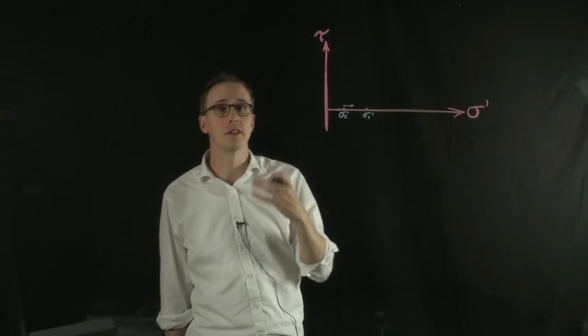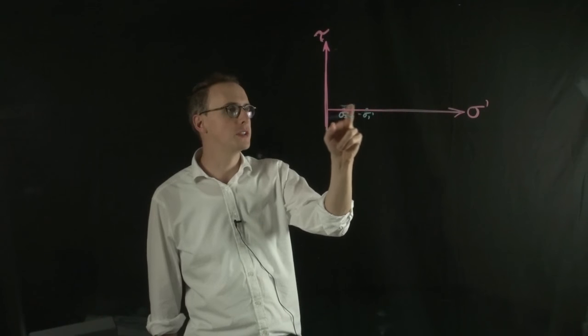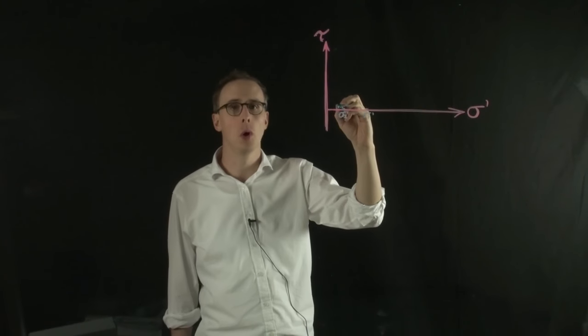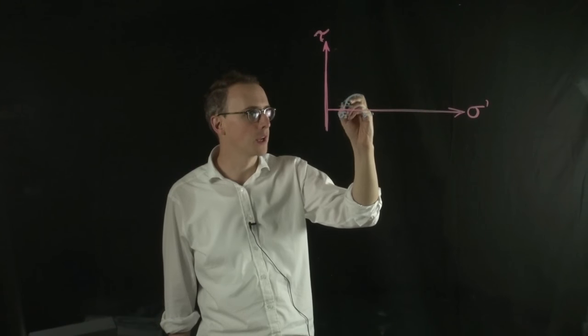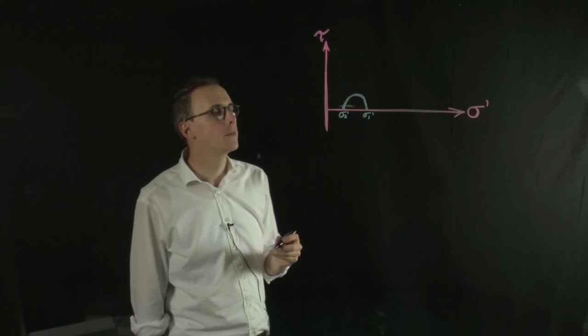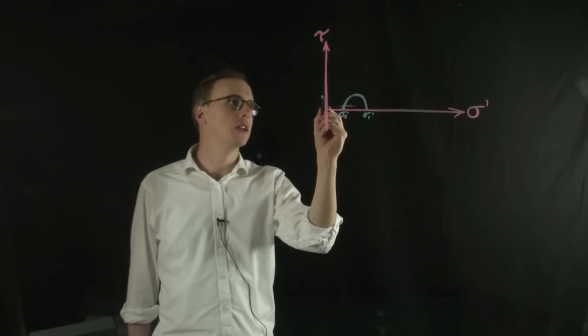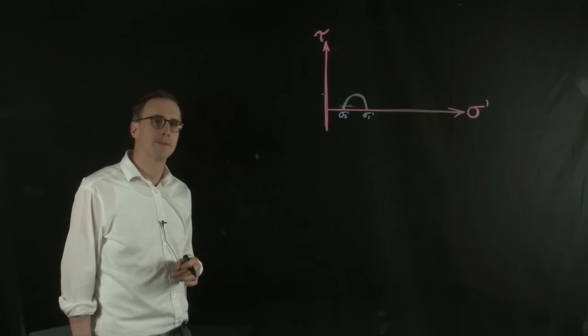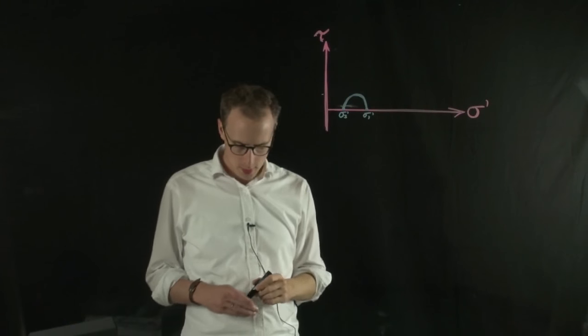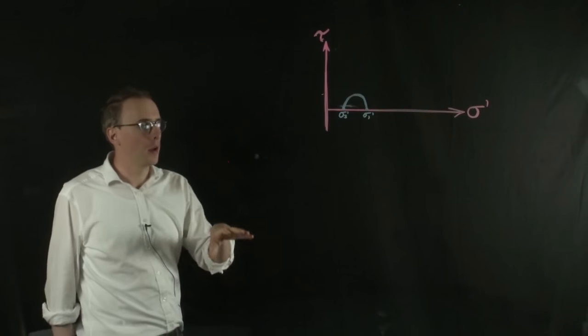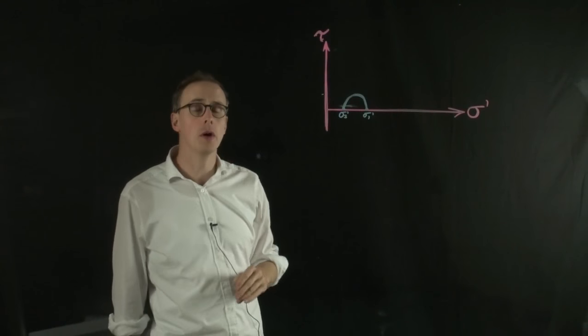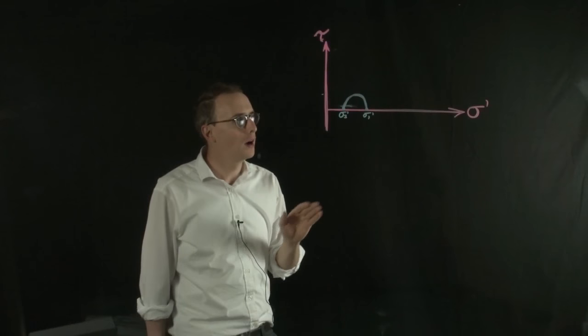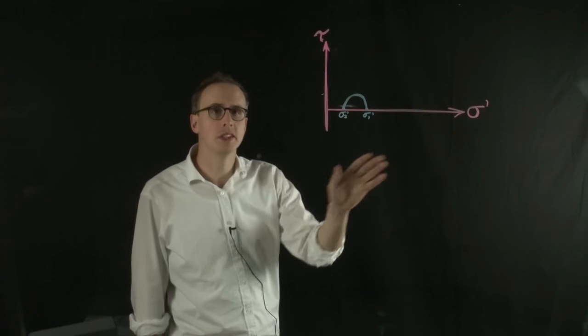You can then draw the top half of a Mohr circle joining them together. From that, you'd be able to get the maximum shear stress during the test. We can draw a Mohr-Coulomb failure envelope, but to do that, we need to do more than one test.